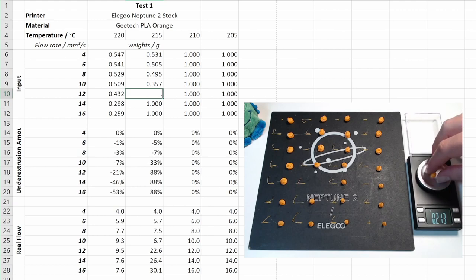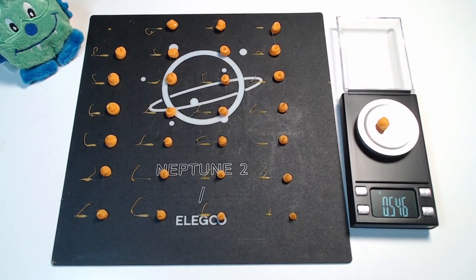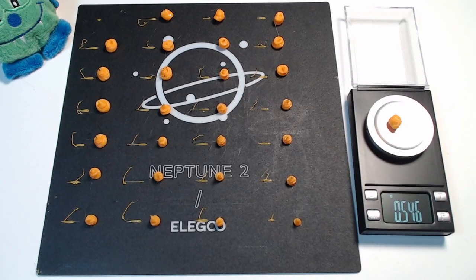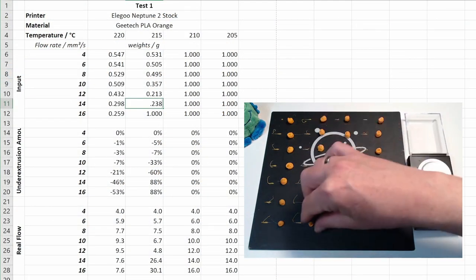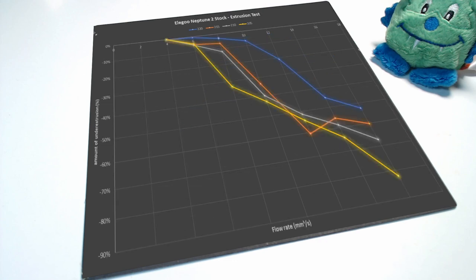For comparable results, I fill out the third tab of the flow test tool. This is done by taking the weight of each blob using a precision scale and noting the result in the corresponding cell. As a result, we get two diagrams. The first one shows the real flow and compares requested flow with the real flow in cubic millimeters per second. The second one shows the amount of under-extrusion.